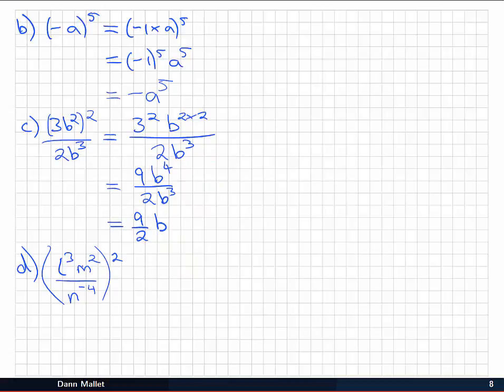In the final example we have (L³M²/N⁻⁴)². I am going to bring that power 2 inside, so I'm going to have L³ˣ², M²ˣ², and N⁻⁴ˣ² as well. Then we'll clean it up: L⁶M⁴/N⁻⁸. But normally when we leave an expression we wouldn't leave a negative power in the base of a fraction because it's redundant—it really just means it should be back up the top as a positive power. So I'm going to put that as N⁸. It would have been -8 on the bottom, but if I bring it up to the top it becomes a positive 8.